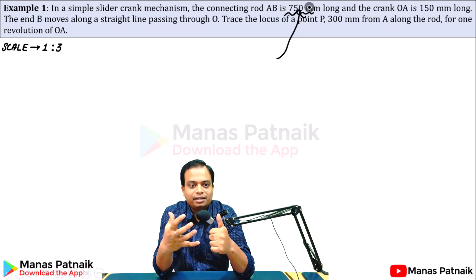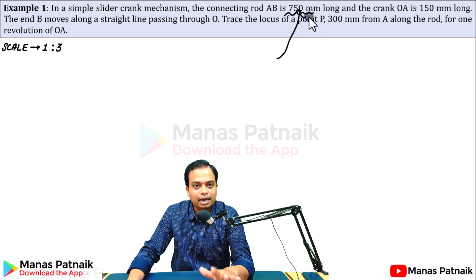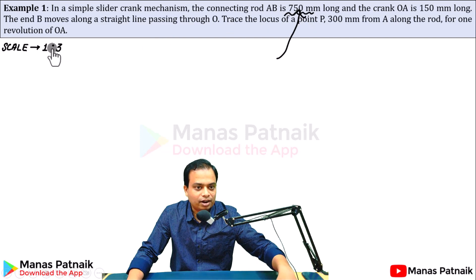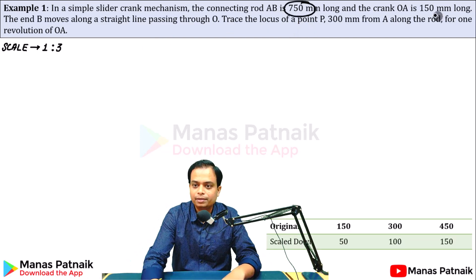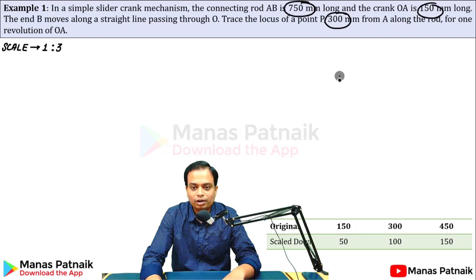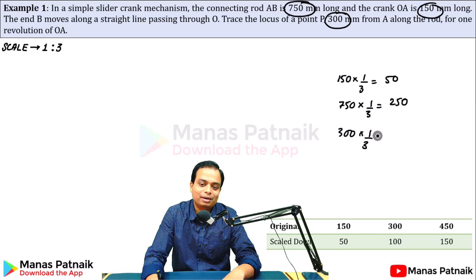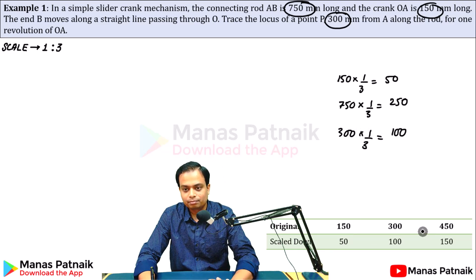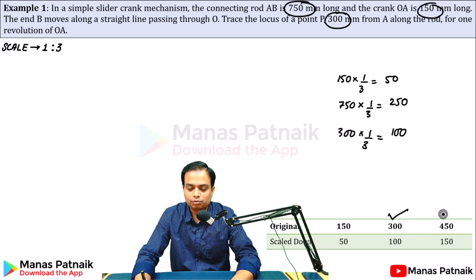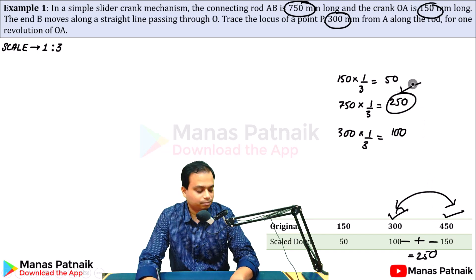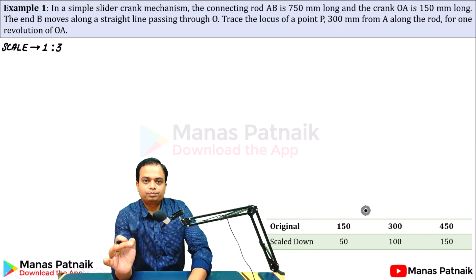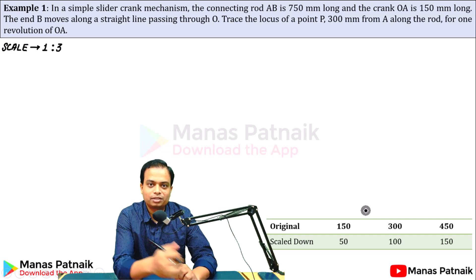So you need to scale down all the dimensions using the factor 1/3. The dimension of 750 mm becomes 250 mm on your drawing sheet; 300 mm becomes 100 mm; and 150 mm becomes 50 mm. The connecting rod length 750 is broken into 300 + 450, which on the drawing becomes 100 + 150 = 250. All these conversions have been done, and I advise you to use the same scale.